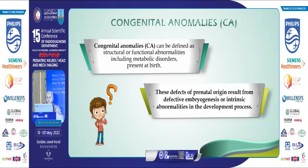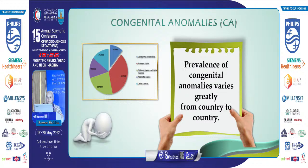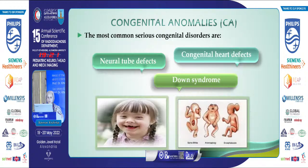Congenital anomalies are defined as including metabolic disorders present at birth. These defects of prenatal origin result from defective embryogenesis or intrinsic abnormalities in the developmental process. WHO reports about 3 million infants born each year with major congenital anomalies, with prevalence varying greatly from country to country. The most common serious congenital disorders include congenital heart defects, neural tube defects, and Down syndrome.